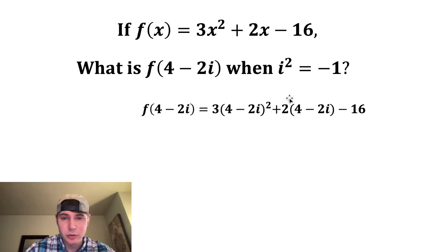I'm going to distribute this 2 to get 2 times 4, which is 8, and 2 times -2i, which is -4i, and bring down the -16. And this 4 - 2i here is squared, which means we're going to multiply it by itself. And then all of this is going to get multiplied by 3.